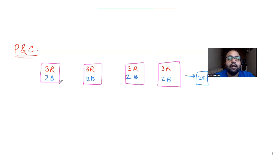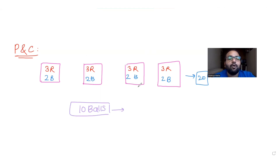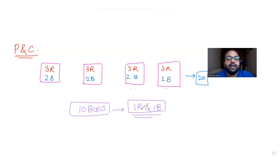We need to find in how many ways we can choose 10 balls from these 20 balls, such that from every box we select at least one red and one blue ball. So from every box we should have at least one red and one blue ball among the 10 selected.